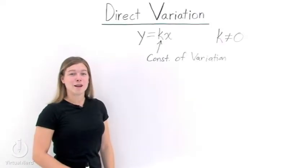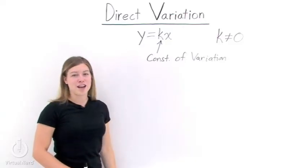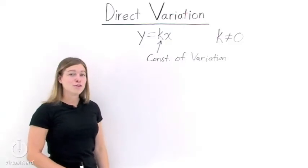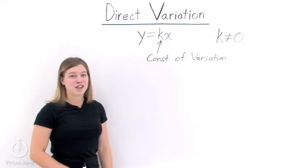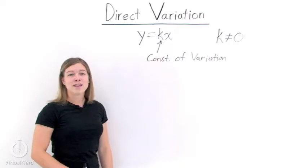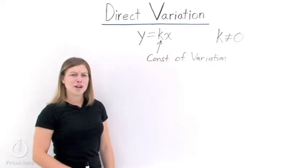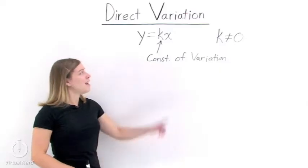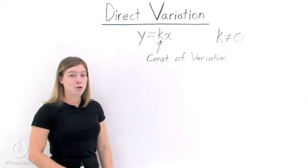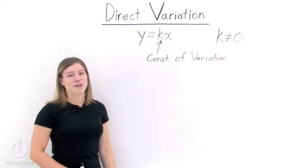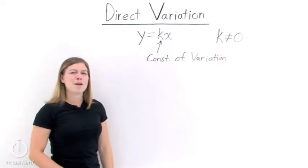Let's take an example using the formula for direct variation. The circumference of a square is directly proportional to the length of one of its sides. The constant of variation is 4. If a square has a side with length 5, what is the circumference? Notice that nowhere in the problem did it say 'direct variation' — it did, however, have the phrase 'directly proportional.' This phrase is often used in word problems instead of 'direct variation,' but it means the same thing.